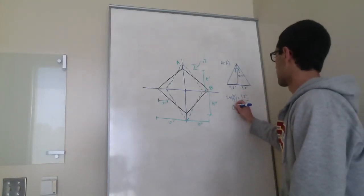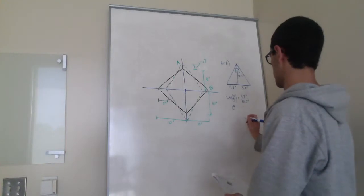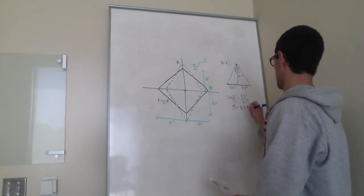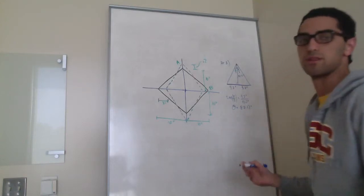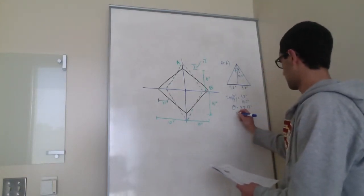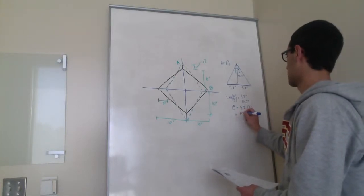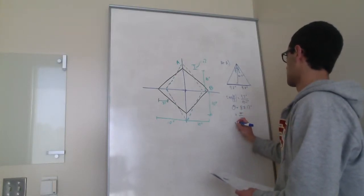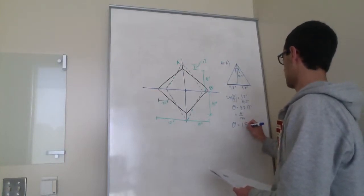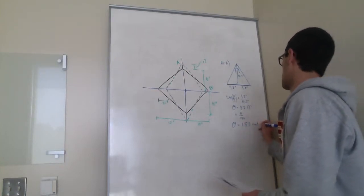So our value for theta will be 87.12 degrees. We need to convert that to radians, times pi over 180. Theta equals 1.52 radians.